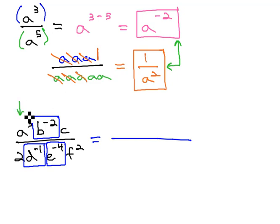So, in the numerator, we still have a cubed and c, but the b to the negative 2 is being moved down to the denominator by virtue of the negative exponent. Once we've moved it, now that exponent is a positive 2.